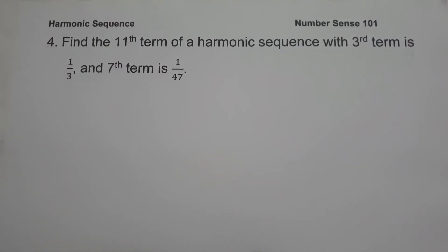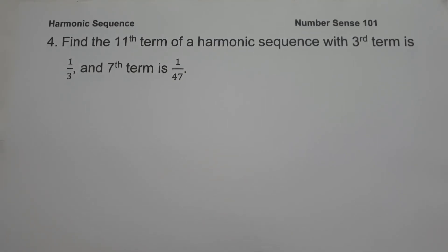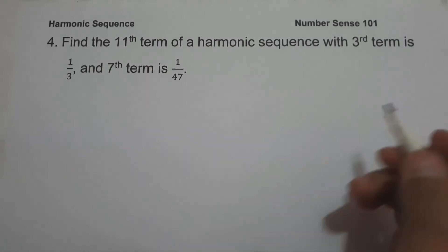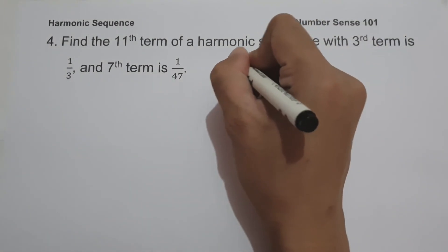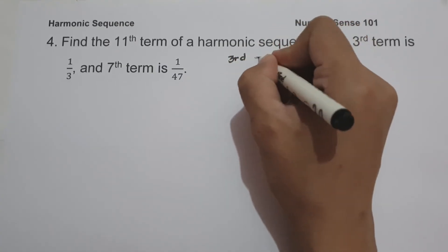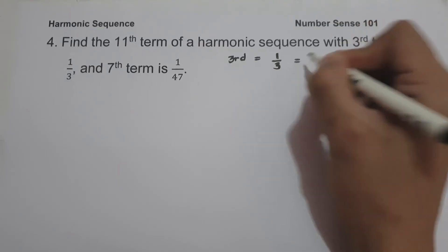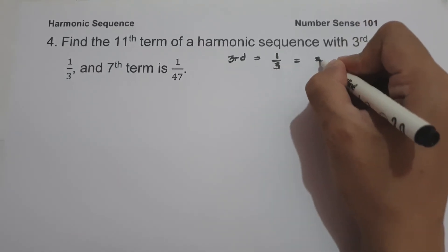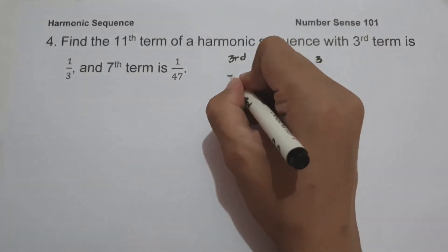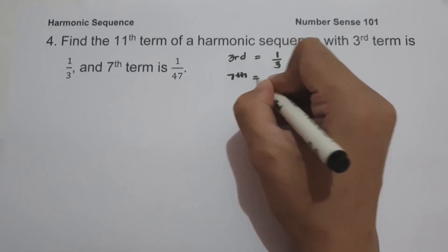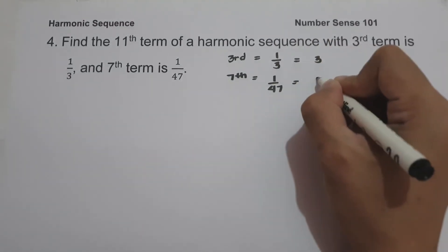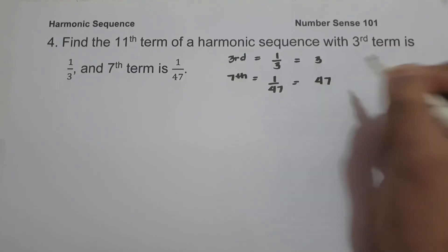On our last example, find the 11th term of a harmonic sequence where the 3rd term is 1/3 and the 7th term is 1/47. Taking reciprocals: the 3rd term of the arithmetic sequence is 3, and the 7th term is 47.